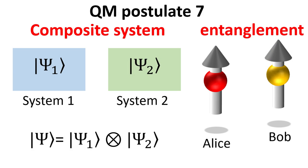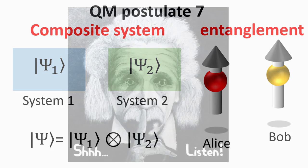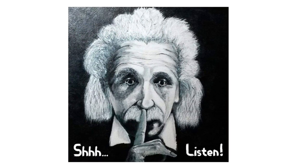The next postulate concerns composite systems. Consider two systems described by the states psi_1 and psi_2. The state that describes the composite system is then given by the tensor product of psi_1 and psi_2. This postulate allows us to define one of the most intriguing ideas related to composite systems, known as entanglement. We will revisit this idea in a future video about the famous experiment involving Alice and Bob.